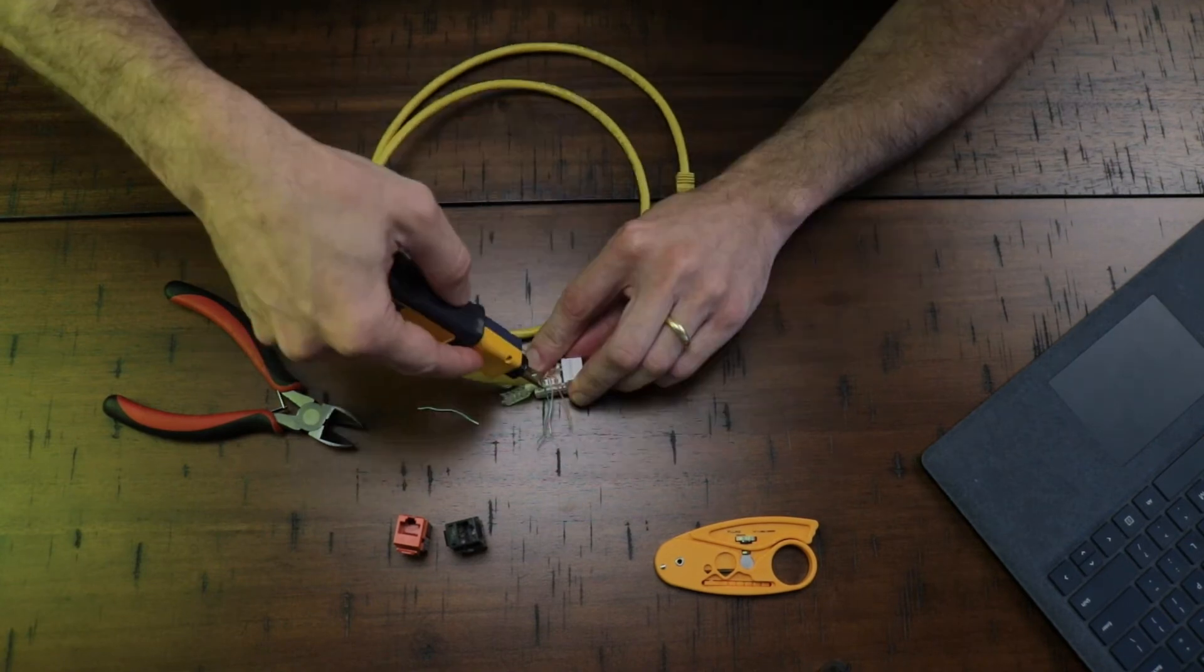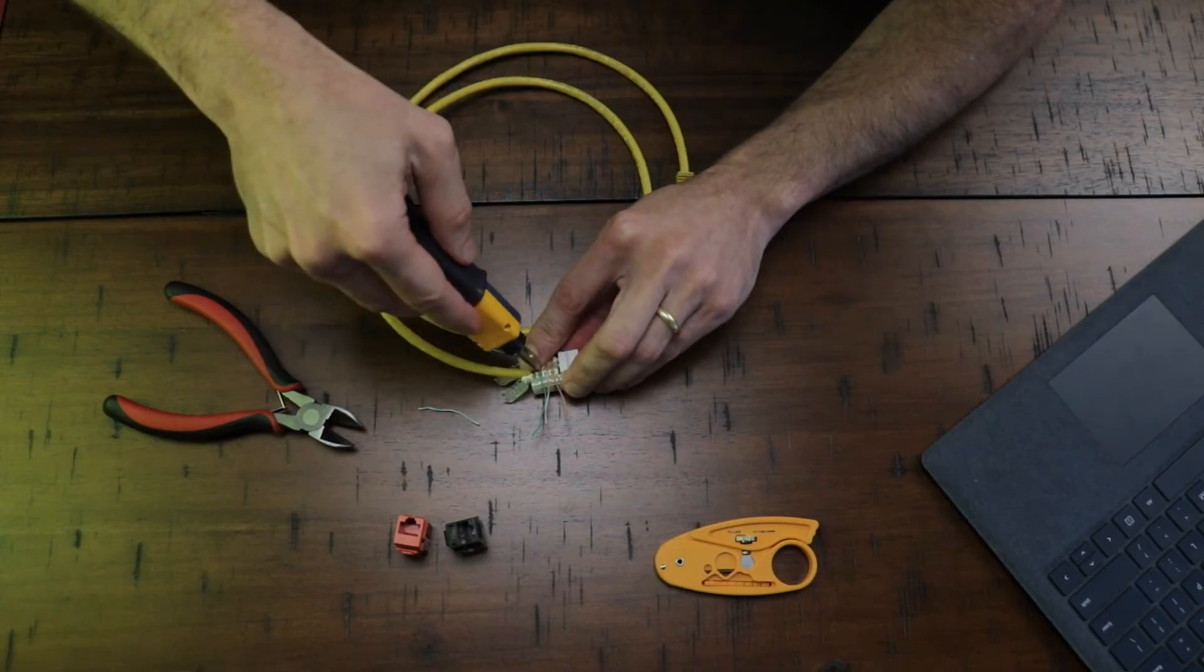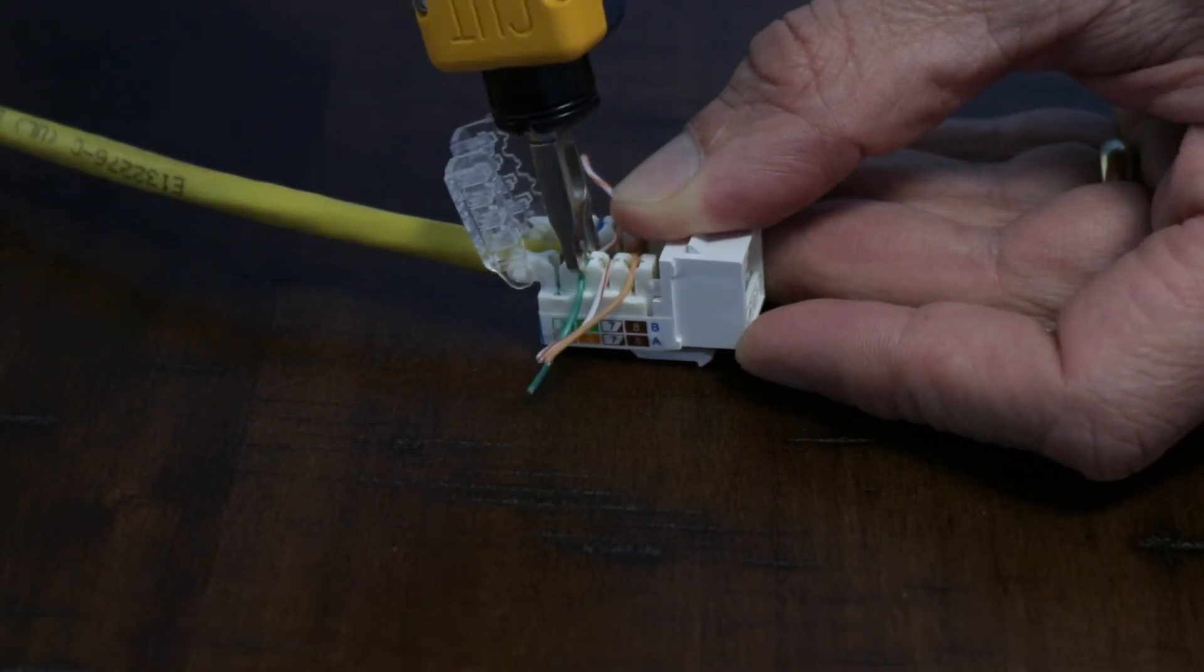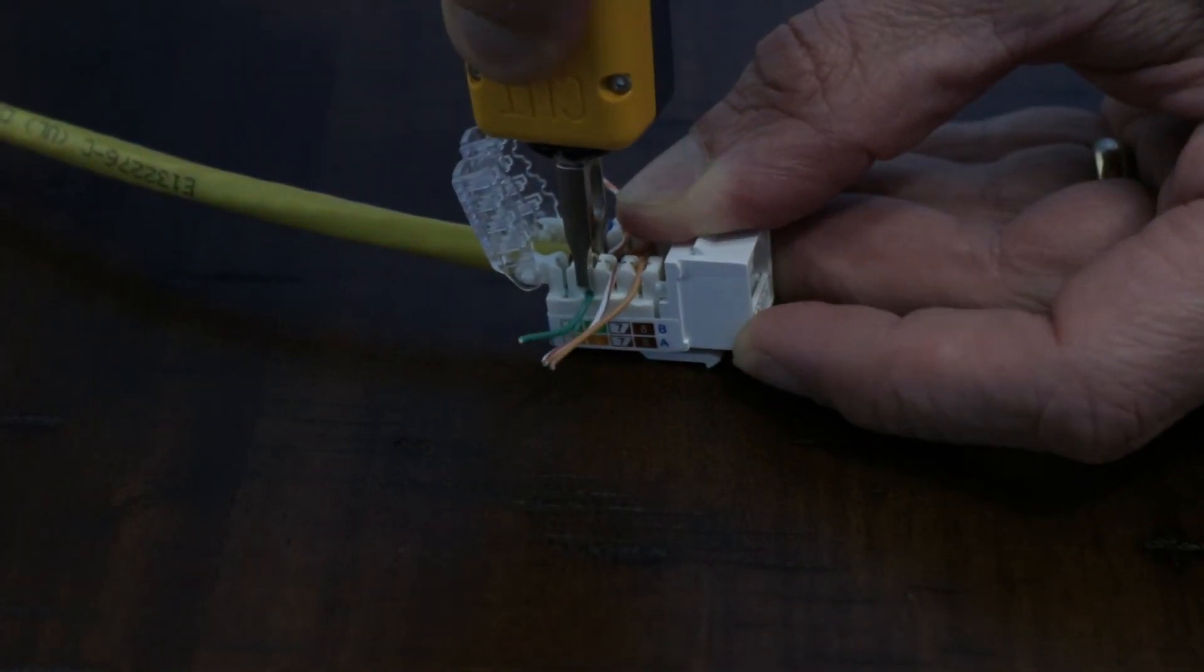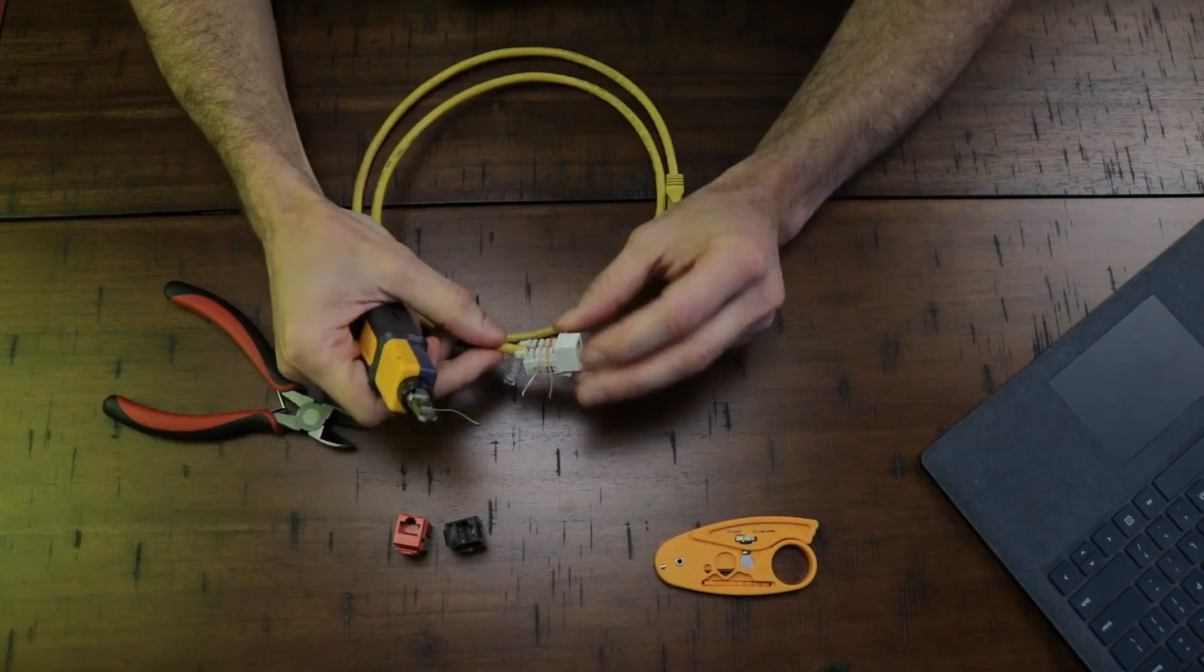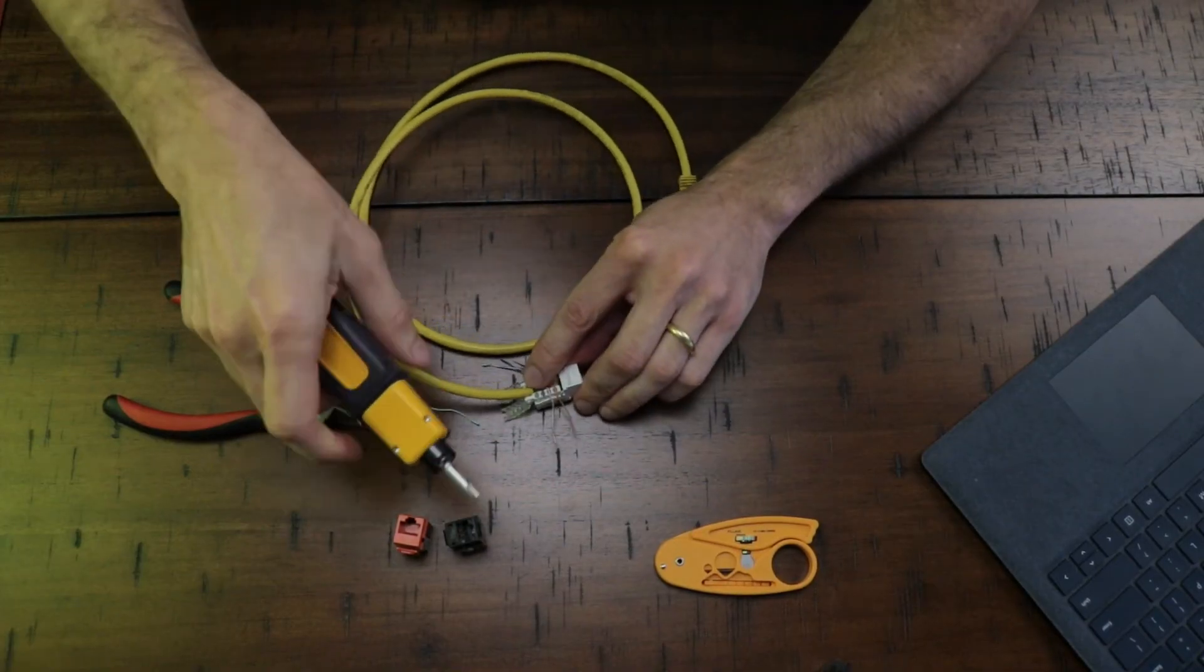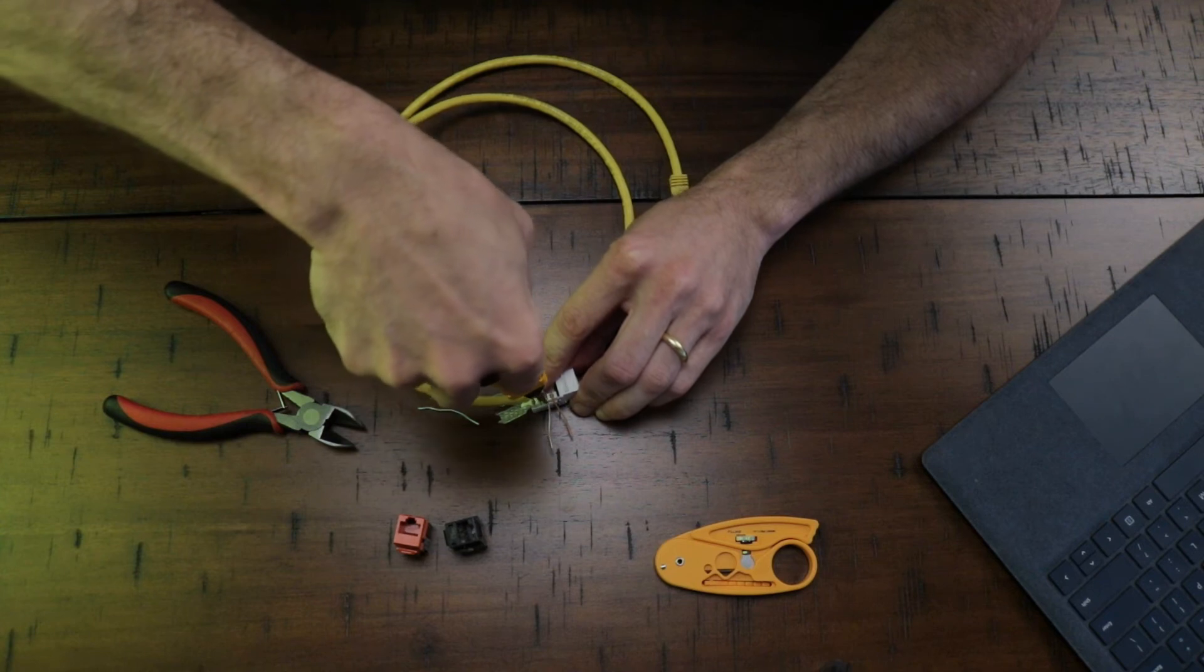Place the punch down tool on top of the wire, and done, just like that. Do that for all the wires.